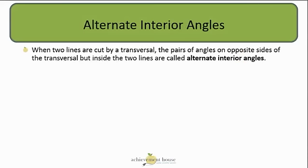Now we're going to use the terms alternate and interior to define a specific angle pair formed when two lines are crossed by a transversal. That particular pair is the pair of angles on opposite sides of the transversal — so alternate — but inside the two lines — interior. So they are called alternate interior angles.